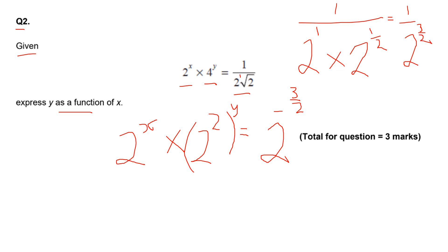Step two now. Using the rules of indices, I can multiply this. I'm going to have two to the power of X multiplied by two to the power of two Y is equal to two to the power of minus three halves.